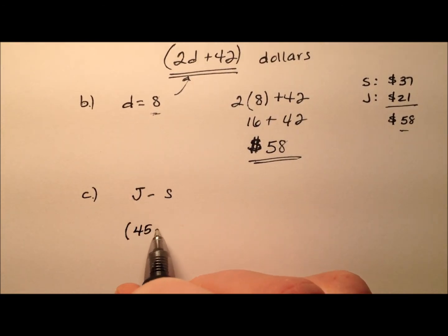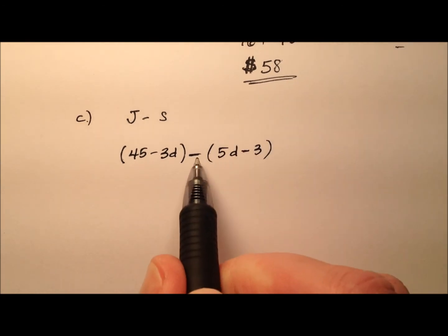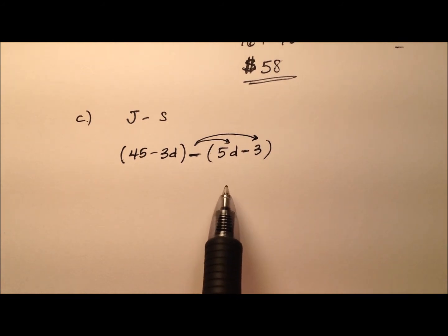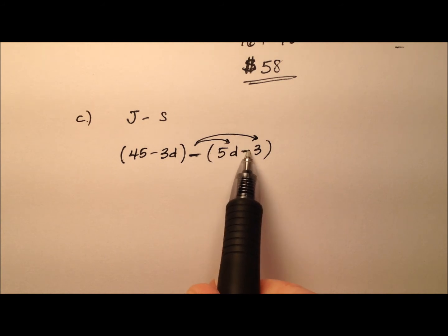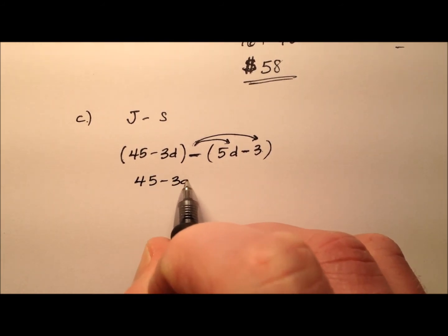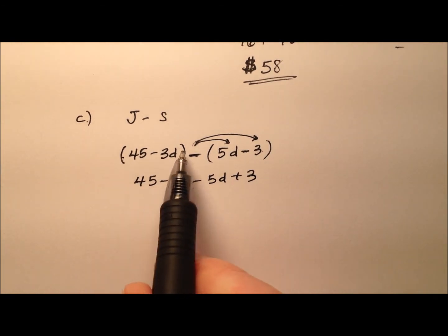Joe was 45 minus 3d, and from that I'm going to subtract 5d minus 3. It's very important to keep the parentheses around these expressions, because when we subtract we need to distribute that negative to those terms. If we leave off the parentheses, we're only subtracting the 5d instead of distributing and subtracting a negative 3, which will be the addition of 3. So be careful with these parentheses.